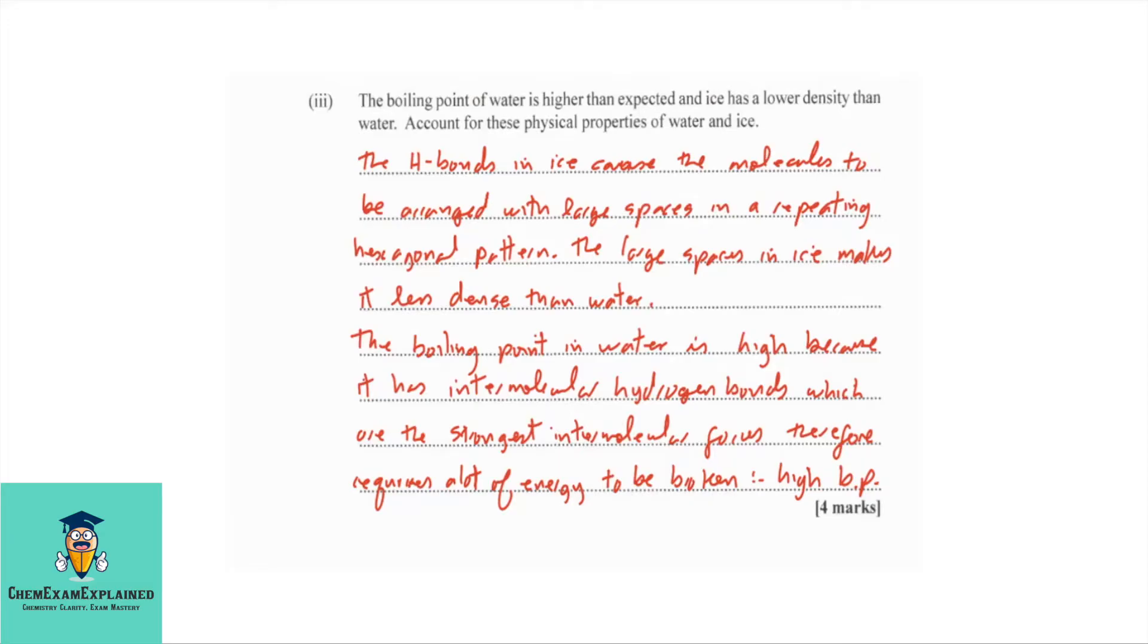The hydrogen bonds in ice cause the molecules to be arranged with large spaces in a repeating hexagonal pattern. The large spaces in ice makes it less dense than water. The boiling point in water is high because it has intermolecular hydrogen bonds, which are the strongest intermolecular forces, therefore requires a lot of energy to be broken, and that is why you have high boiling point.